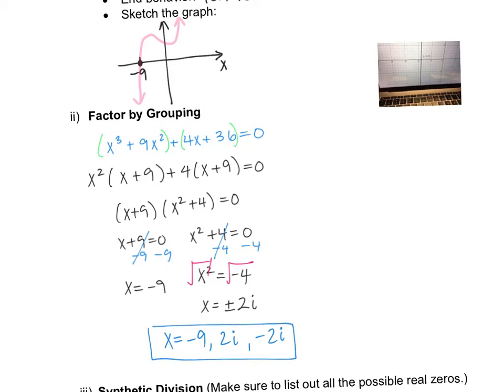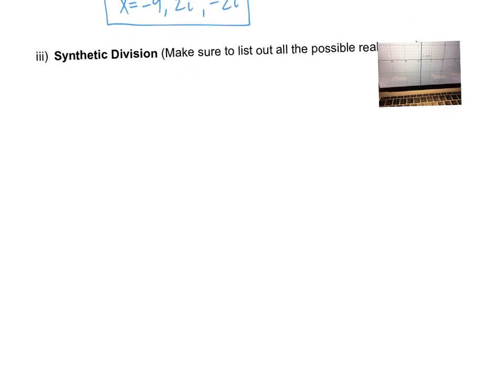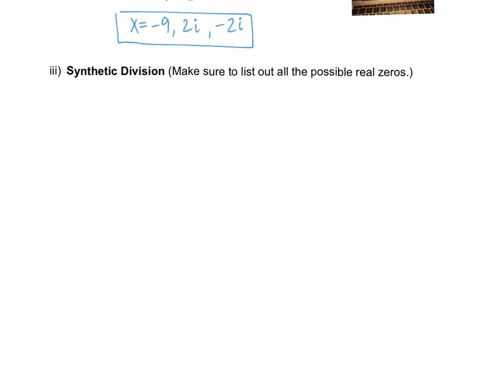So that is showing how to prove and find x using grouping. And then the last method is trying to use synthetic division. And the first thing you have to do is list out all the possible real solution. The reason why I want you to do this is to see if the one that you found on the graph, x equals negative nine, does it show up on your list?